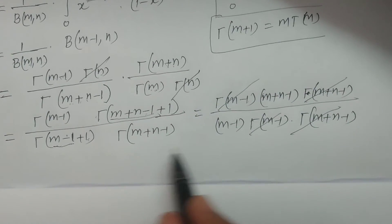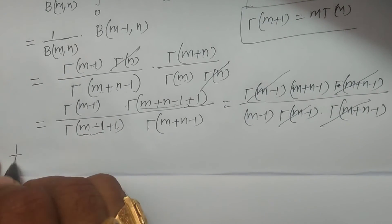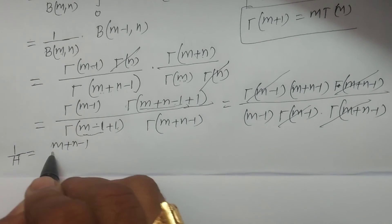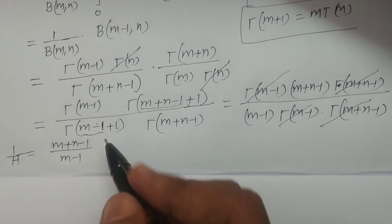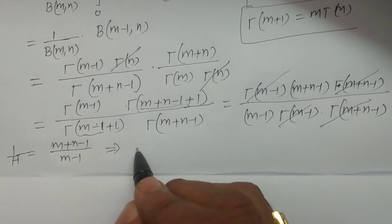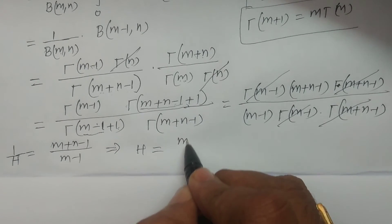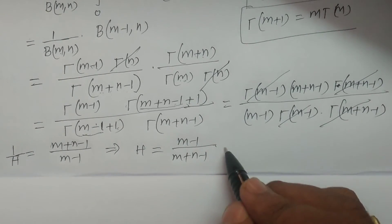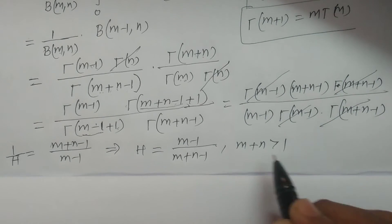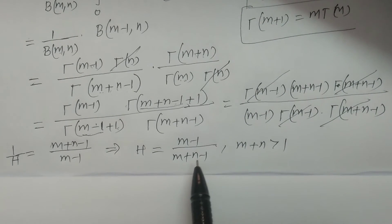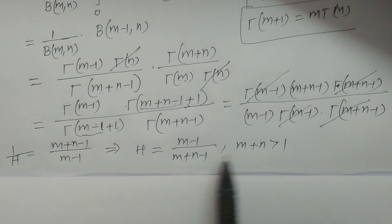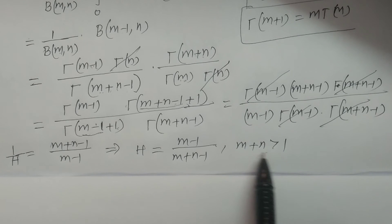So the value here: 1 by h is equal to m plus n minus 1 divided by m minus 1. Which implies h is equal to m minus 1 divided by m plus n minus 1. This is the harmonic mean, and it can only be defined for m plus n greater than 1, because if m plus n is less than 1, the denominator becomes negative.